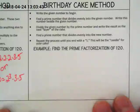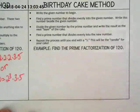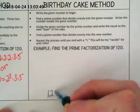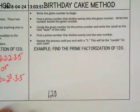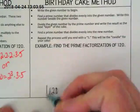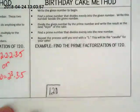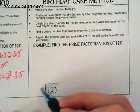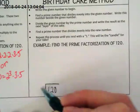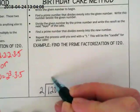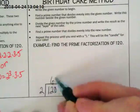So the birthday cake method starts at the bottom. Put 120 down here. We kind of do upside down division. We're going to put a layer over this. And on the outside, we're going to put a prime factor of 120. We're going to put 2. And what would go up here then? 60.